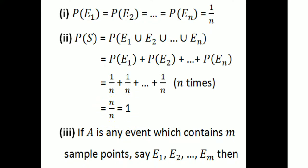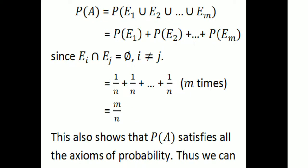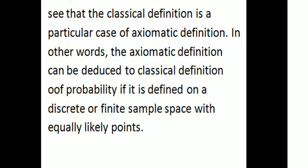If A is any event which contains m sample points E1, E2, etc., Em, then probability of A equals probability of E1 union E2 union... union Em equals probability of E1 plus probability of E2 plus... plus probability of Em, since every Ei intersection Ej equals phi for i not equal to j. Each probability is 1 by n, so total is m by n. This shows that probability satisfies all axioms of probability.